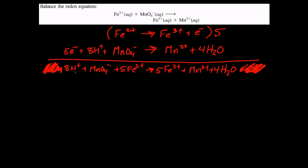And if you check, eight hydrogens, eight hydrogens, one manganese, one manganese, four oxygens, four oxygens, five irons, five irons, and the charge balances as well. So this is our balanced chemical redox equation.